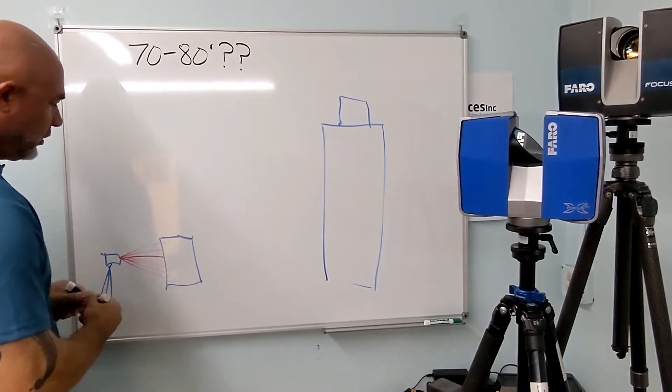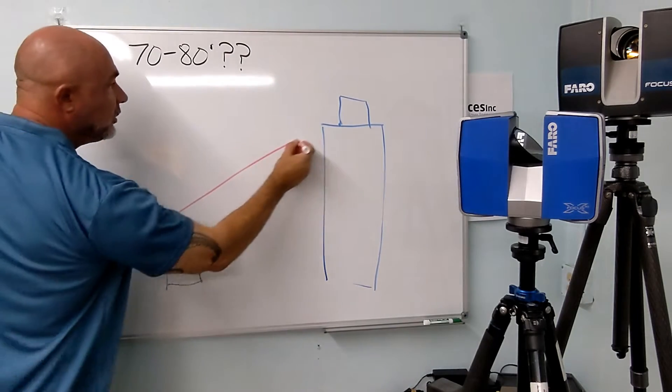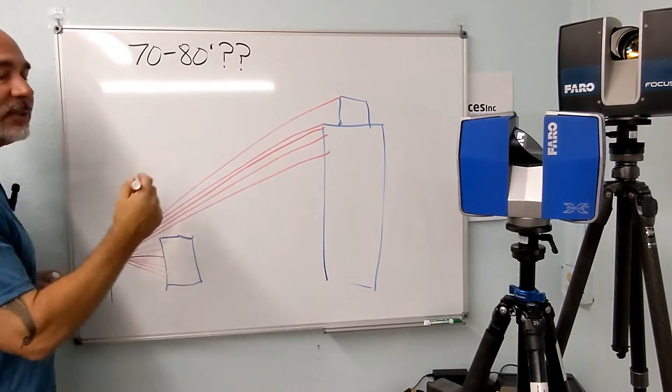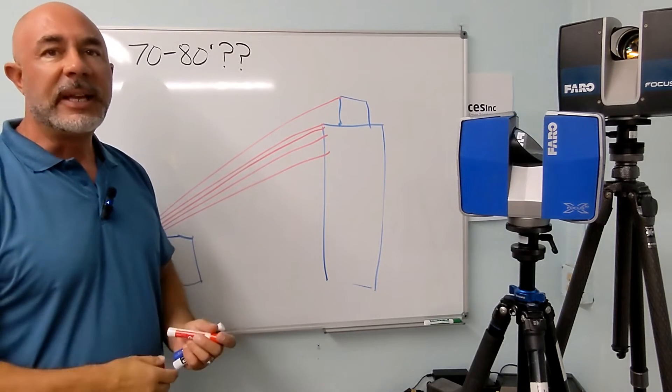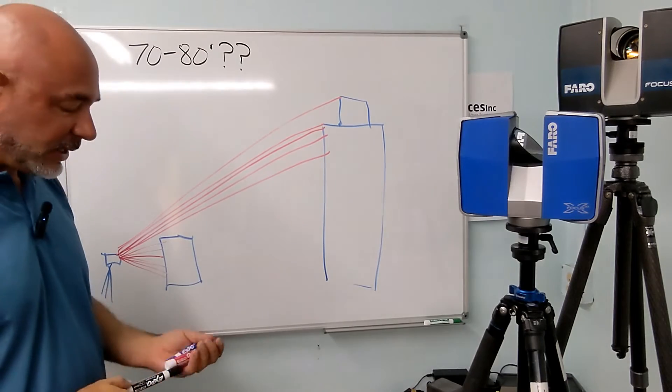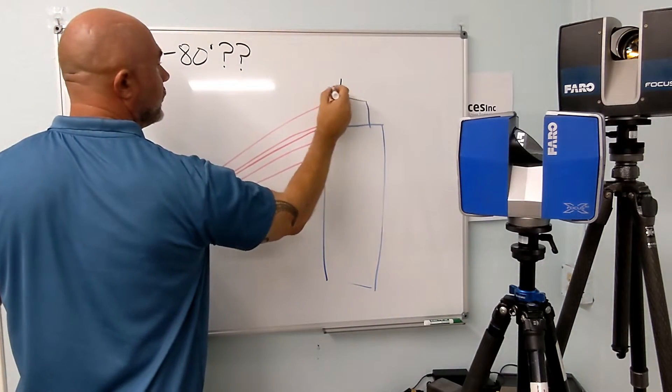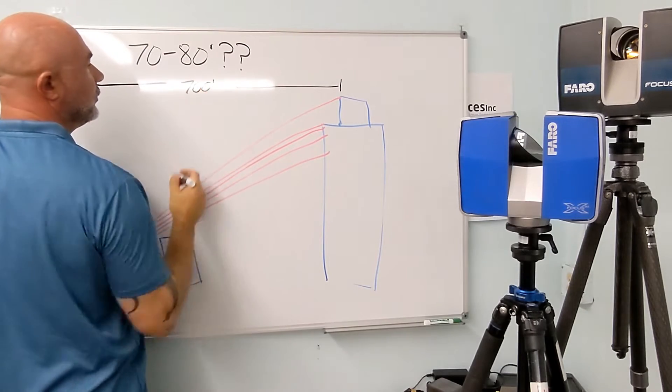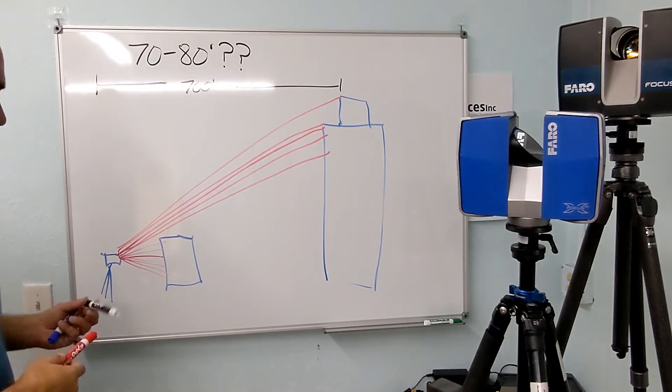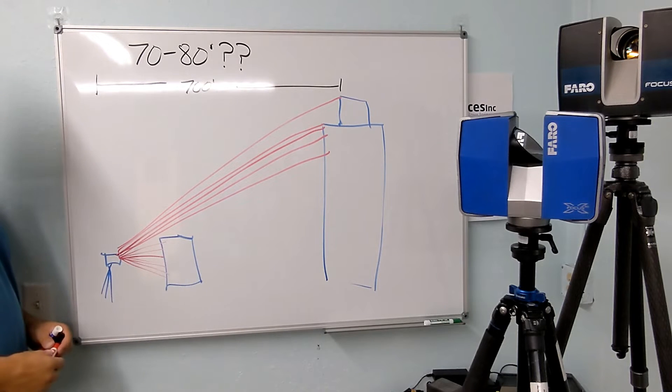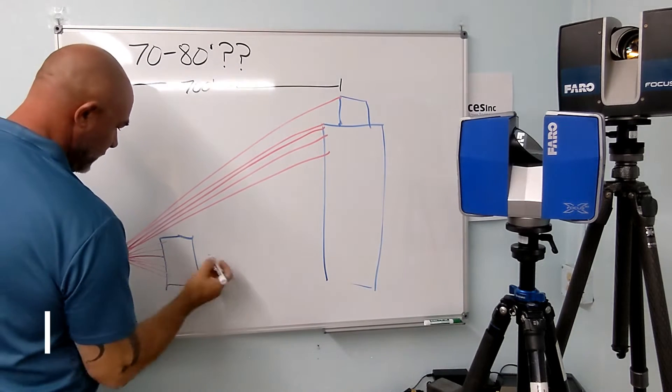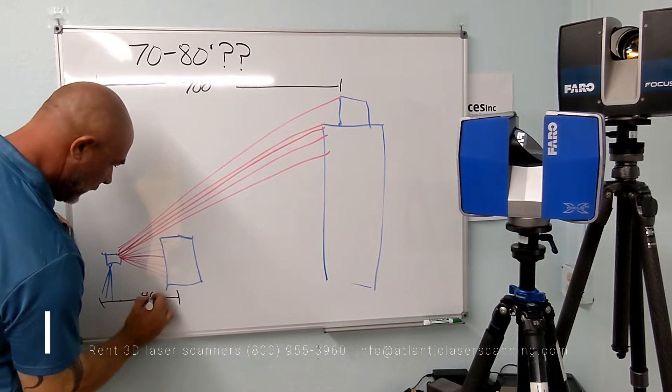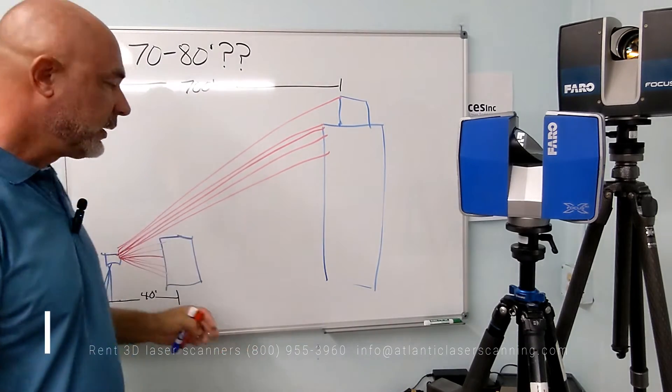Once you get beyond this range, you're always going to be capturing something in the background. Is the data usable data in the background? It depends on what you define as usable data. Now, if this building is say 700 feet from our scanner and the piece of equipment that we're scanning down here is, let's just say that that is 40 feet.